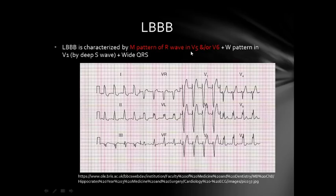Left bundle branch block also has an RSR' pattern, but the two R waves are closer together, so it's called the M pattern — seen in V5 or V6. You can see V5 and V6 both have this M pattern. So this is left bundle branch block.